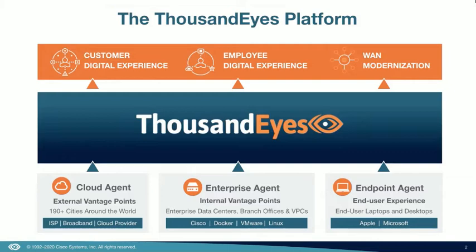The second is enterprise agents. These are internal vantage points that provide the exact same capability as cloud agents, but they're deployed inside customers' networks — inside data centers, branch offices, VPCs in the cloud — and they can be deployed on a number of different form factors: Cisco hardware, Docker containers, virtual machines, Linux operating systems, or even Raspberry Pis.